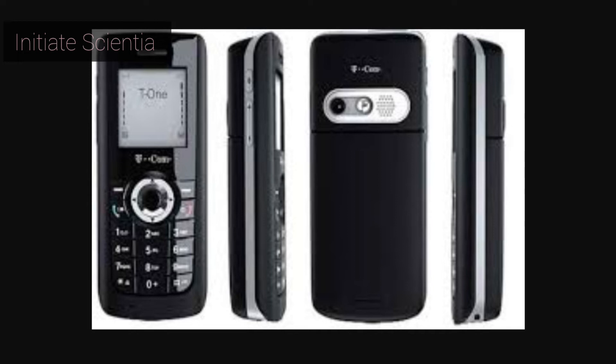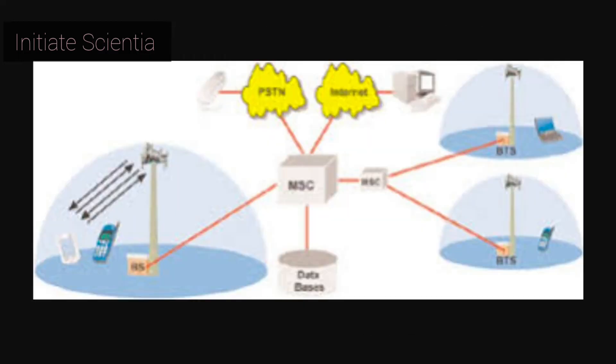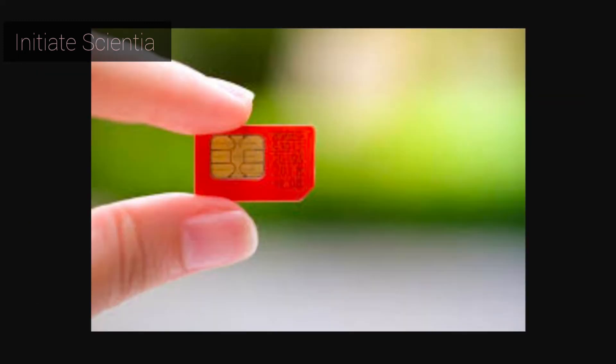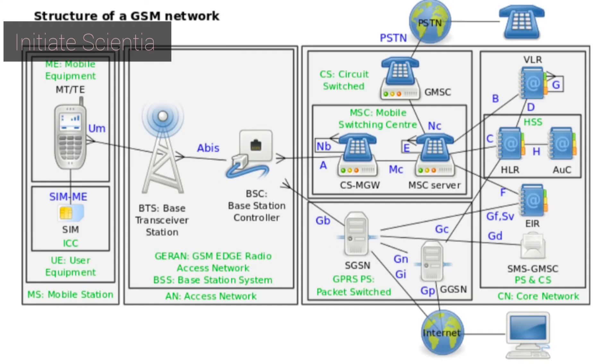Macro cells can be regarded as cells where the base station antenna is installed on a mast or on a building above average rooftop level. Micro cells are cells whose antenna height is under average rooftop level. They are typically deployed in urban areas.